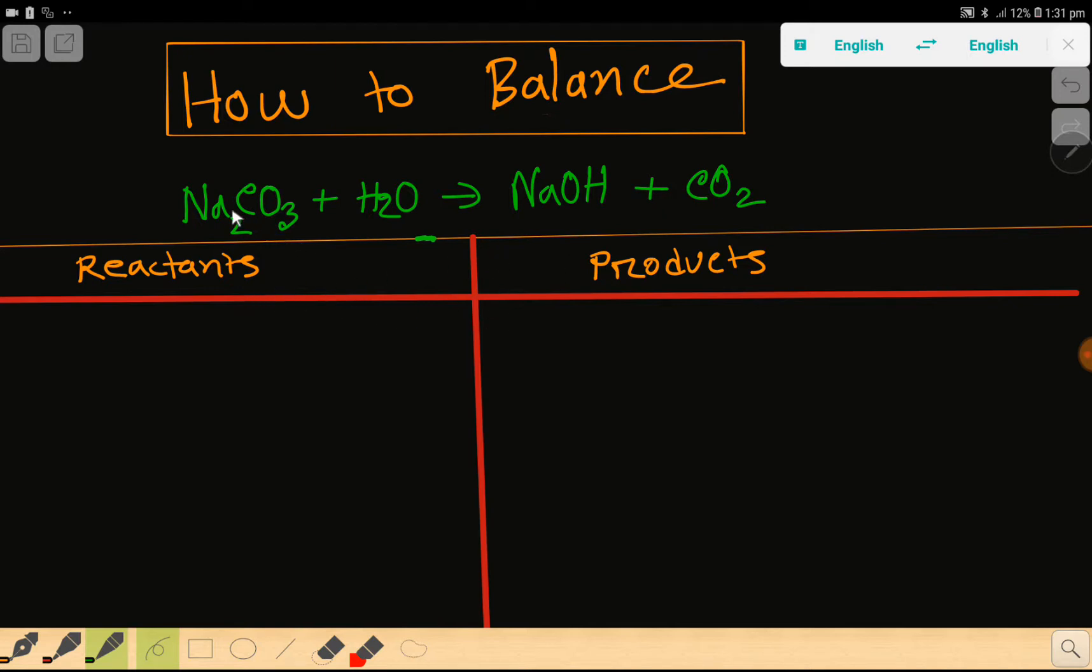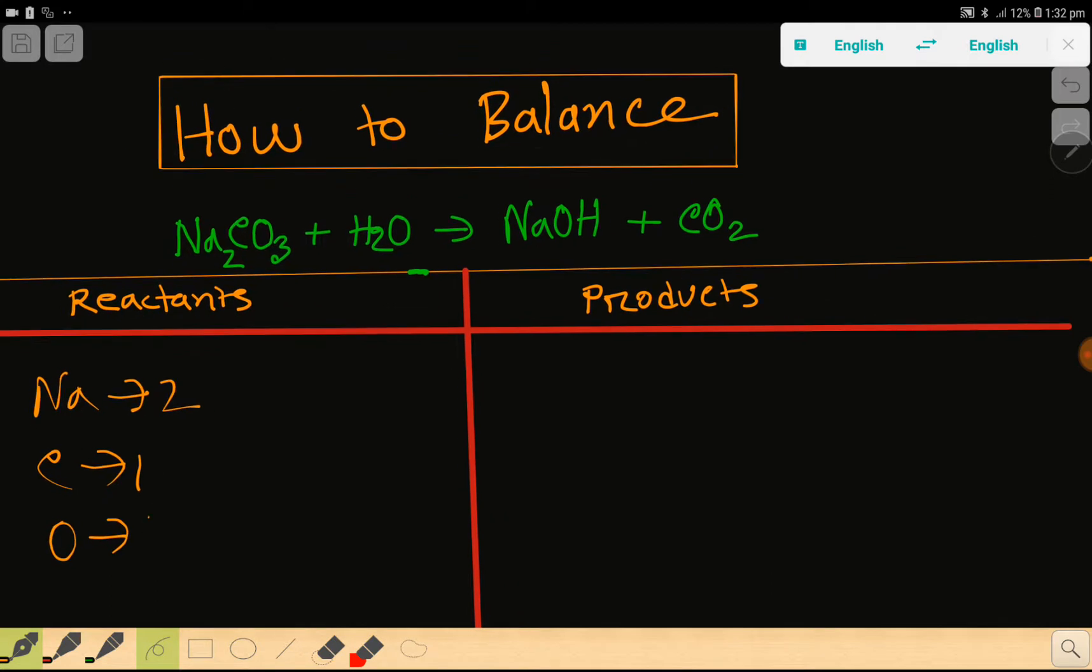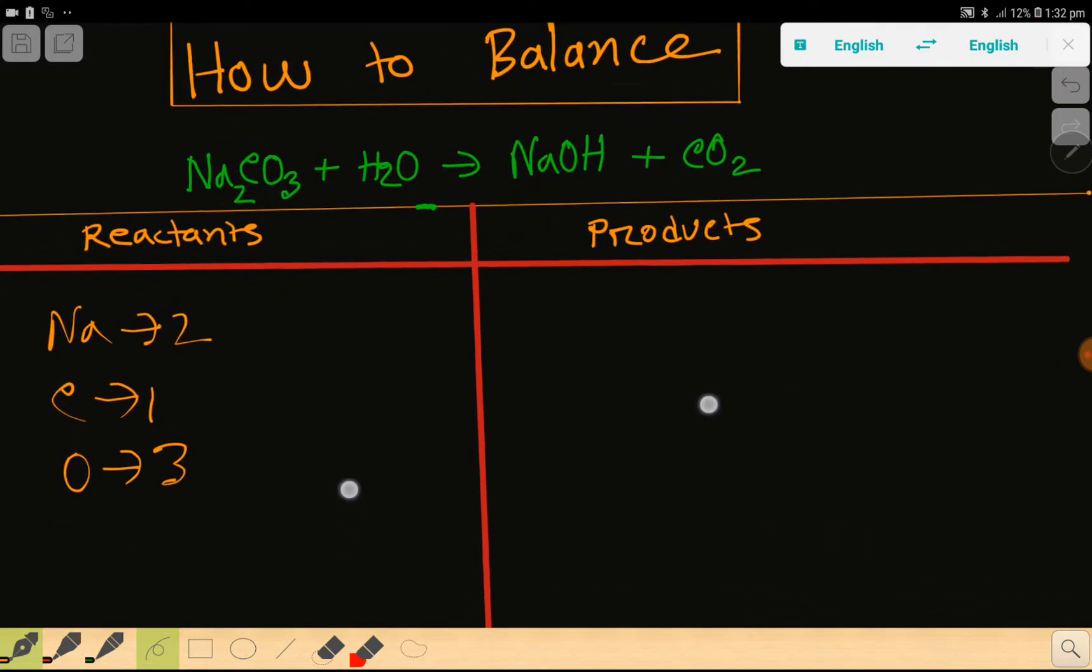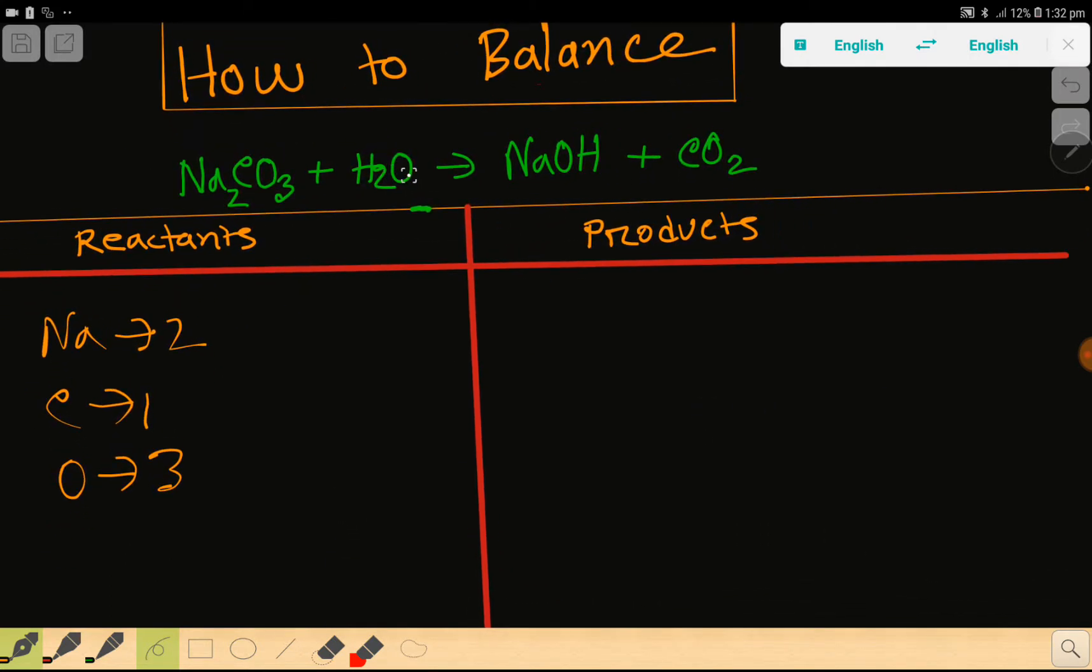Like this. So now we need to count the number of atoms. On the left-hand side we have sodium which is two, then we have carbon which is one, we have oxygen which is three.